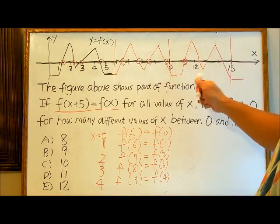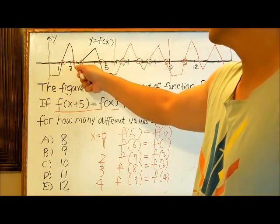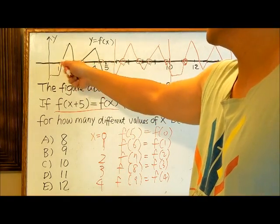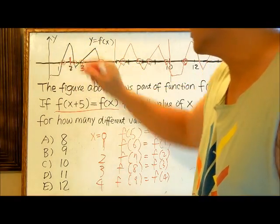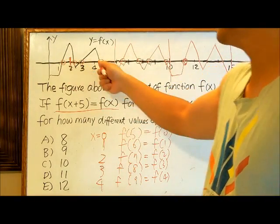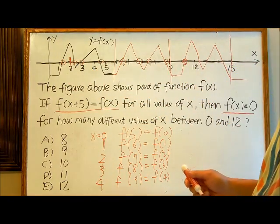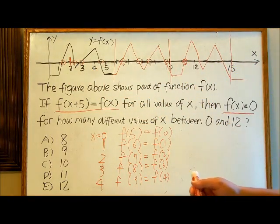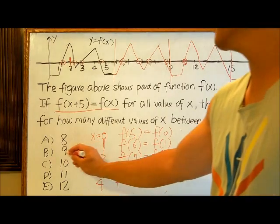Now from 10 to 12, there is only one point. So we have four points in [0,5], four points in [5,10], and one point in [10,12]. Four plus four plus one is 9.